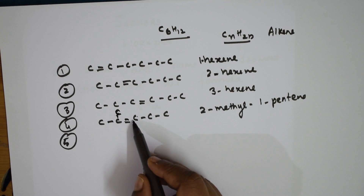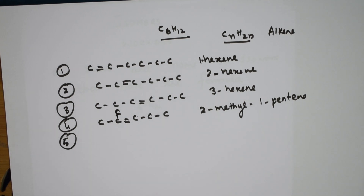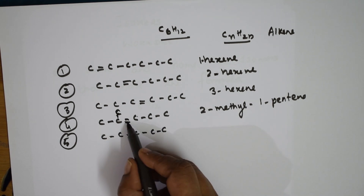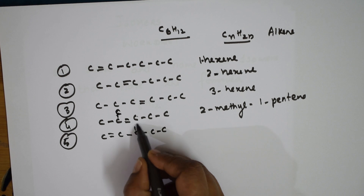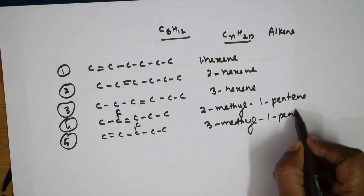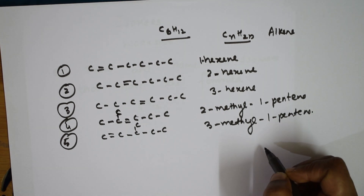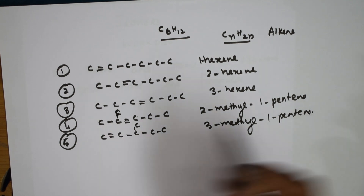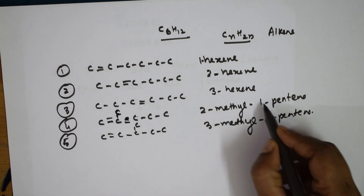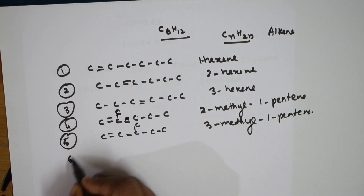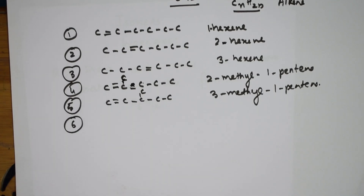Now we are going to shift this methyl group from the second position to the third position. 1, 2, 3, 4, 5 — the double bond shifts here as well. Name it: this is 3-methyl-1-pentene. Let me keep this as 1-pentene only and shift the 2-methyl pentene later. That makes five isomers done so far.